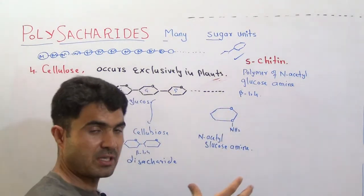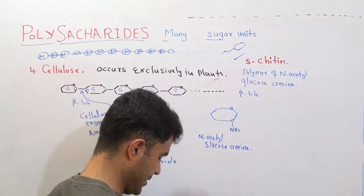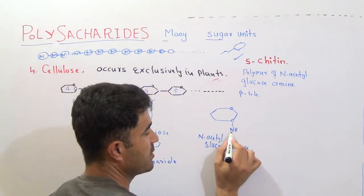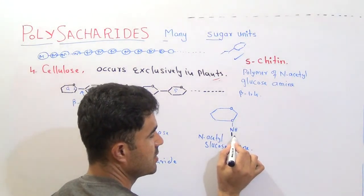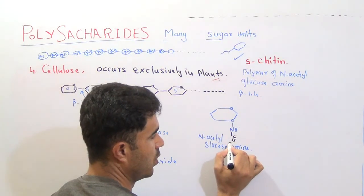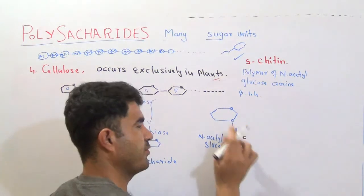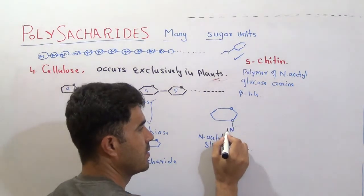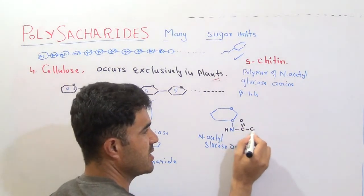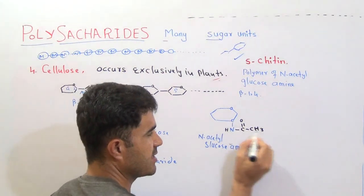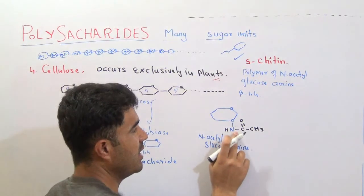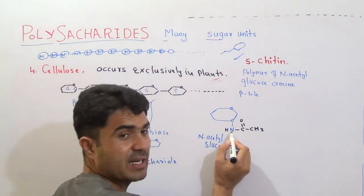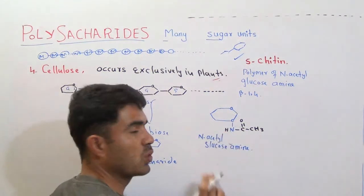If we add one acetyl group — meaning one hydrogen is removed and we add C double bond O, CH3 — this is the acetyl group. We call it N-acetylglucosamine because the acetyl group is present at the nitrogen. So it is glucosamine with an acetyl group at nitrogen, hence N-acetylglucosamine.